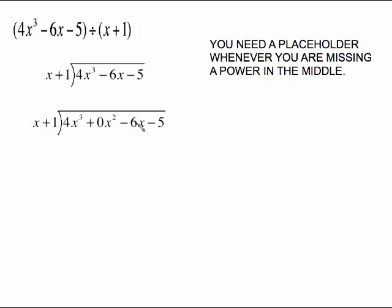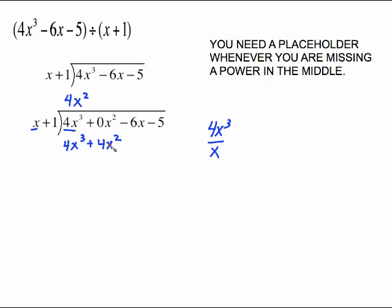Do you absolutely have to do this placeholder thing? No, but it's just safer — it's going to help you keep your variables lined up correctly. So I suggest when you're missing a power, use the placeholder. If you didn't use it, you would have put a plus 4x squared right there, lining up an x squared with an x. Those are not like terms, and you're going to get messed up. That's why we need the placeholder.